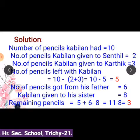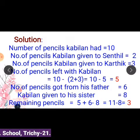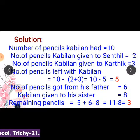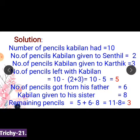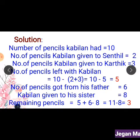Number of pencils Kabilan had is equal to 10. Number of pencils given to Sendhil is equal to 2, and given to Karthik is equal to 3. Now, the number of pencils left with Kabilan equals 10 minus (2 plus 3). First we do the addition and then subtraction: 2 plus 3 equals 5. So 5 is subtracted from the total — 10 minus 5 equals 5.